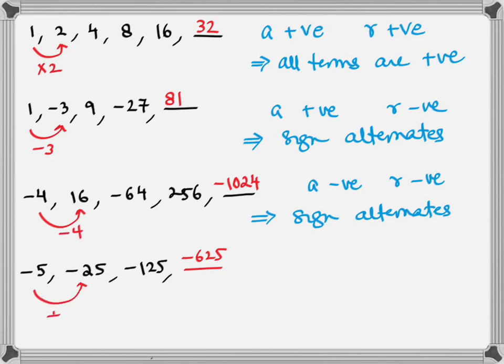Therefore, in the very last series, the first term is negative and the common ratio is positive, meaning all the terms in this series are negative. We can simplify further: if the common ratio is positive, whatever the sign of the first term, that sign remains throughout. Look at the first series — first term positive, common ratio positive, all terms positive. Look at the last series — first term negative, common ratio positive, all terms negative. The second observation is that if the common ratio is negative, irrespective of whether the first term is positive or negative, the sign alternates — the series consists of positive and negative terms.